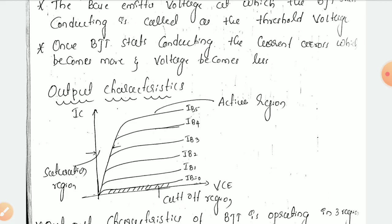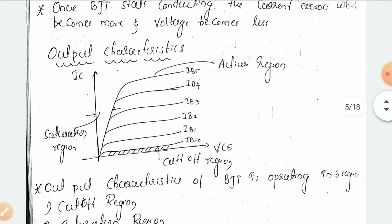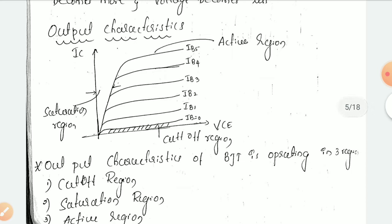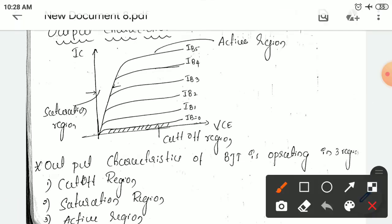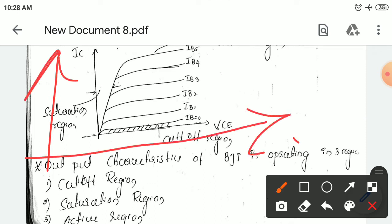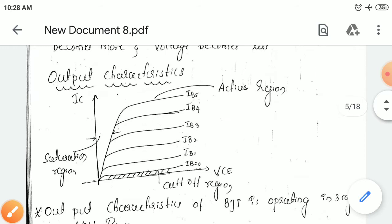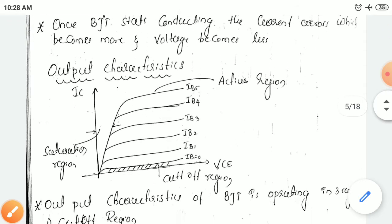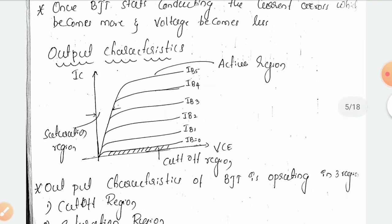Once BJT starts conducting, the current becomes more — the current increases and the voltage becomes less. That is the input characteristics. The output characteristics will indicate the graphical representation for the variation of the collector current with respect to the collector emitter voltage. In the x-axis we have collector current and in the y-axis we have collector to emitter voltage.